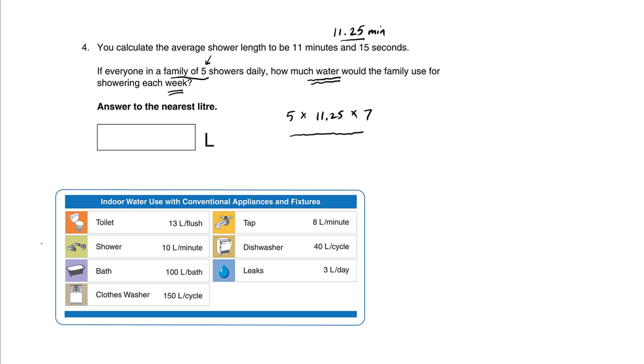And so we have to refer to the chart on the other page, which shows that the shower uses 10 liters per minute. So what we have here is the total number of minutes. We have to multiply by 10 liters.